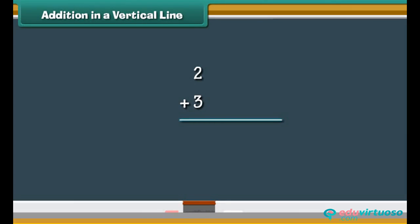Addition in a vertical line. Let us now add numbers vertically. To do that, let us write the numbers one below the other. To add 2 and 3 vertically, write the two numbers one below the other. Draw two vertical lines next to 2 and three vertical lines next to 3. Count the vertical lines: 1, 2, 3, 4, 5. Therefore, 2 plus 3 is 5.